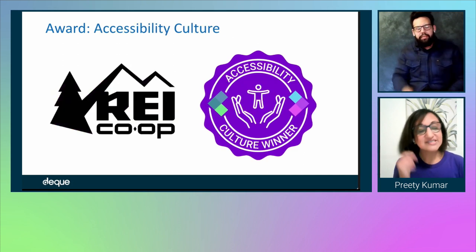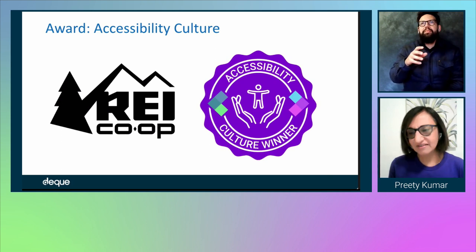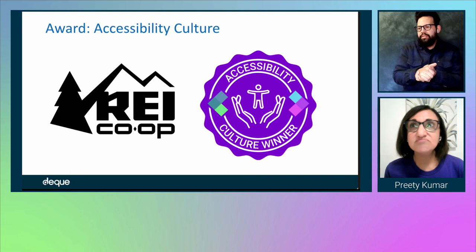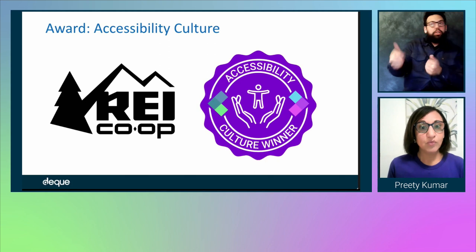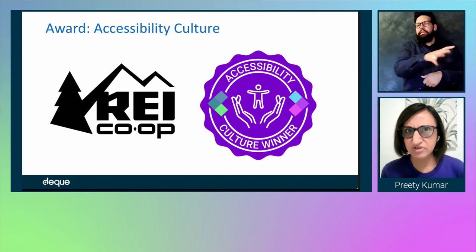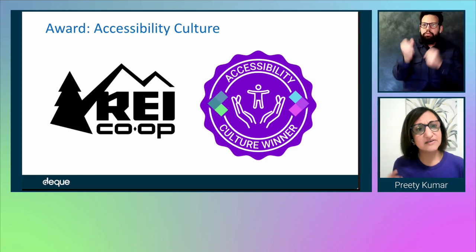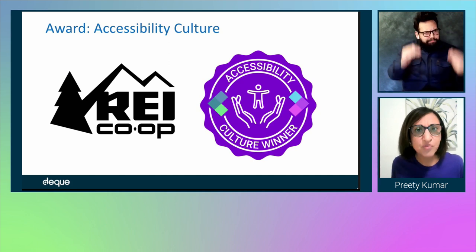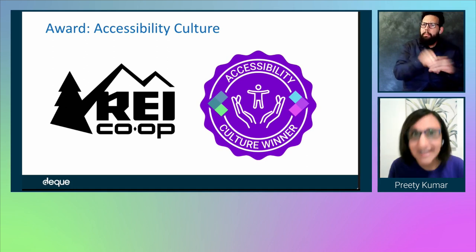The next award is about advancing the practice of accessibility in innovative ways and making it part of the culture. Culture is one of the most difficult things — it's the difference between a good company and a great company. Accessibility culture is very difficult, and this award is for really taking usability and accessibility and advancing the practice in innovative ways while making it part of the culture. That award goes to REI Co-op. Congratulations.